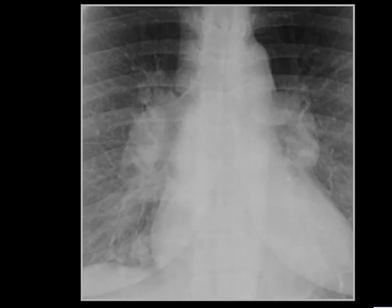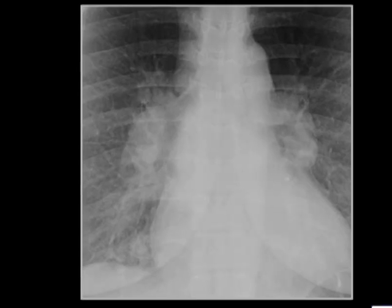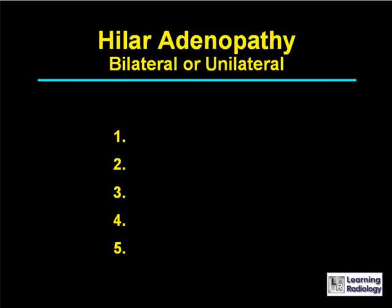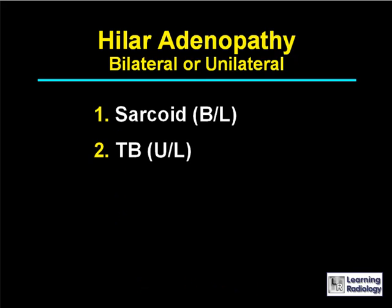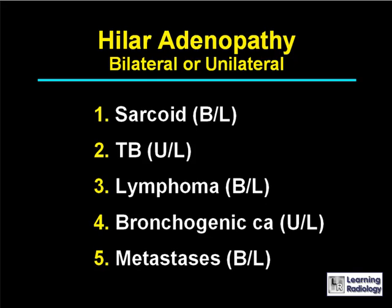Here's the next differential. The differential is hilar adenopathy, bilateral or unilateral. There are five causes. The differential diagnosis for bilateral or unilateral hilar adenopathy would include sarcoid, which is usually bilateral; tuberculosis, which is usually unilateral; lymphoma, which is usually bilateral; bronchogenic carcinoma, usually unilateral; and metastases, which can be either unilateral or bilateral.